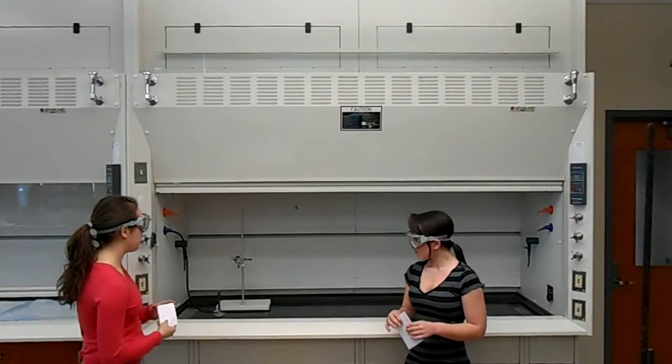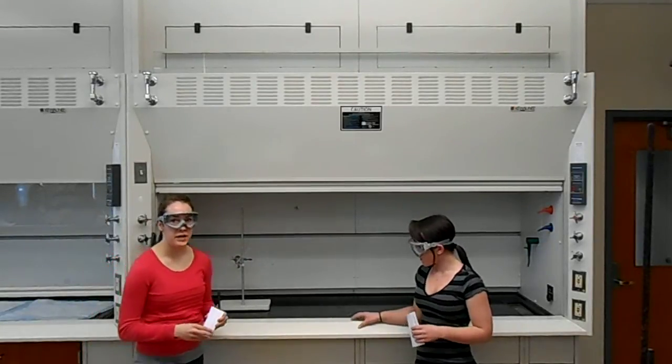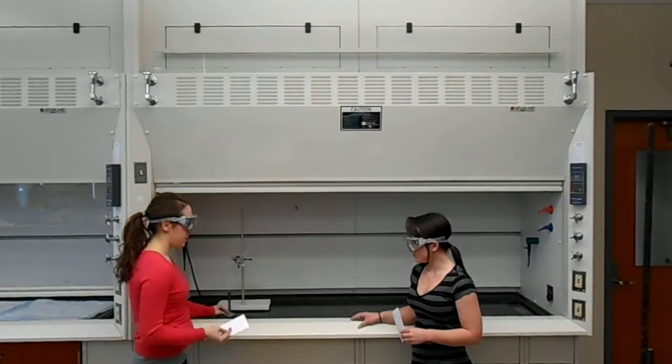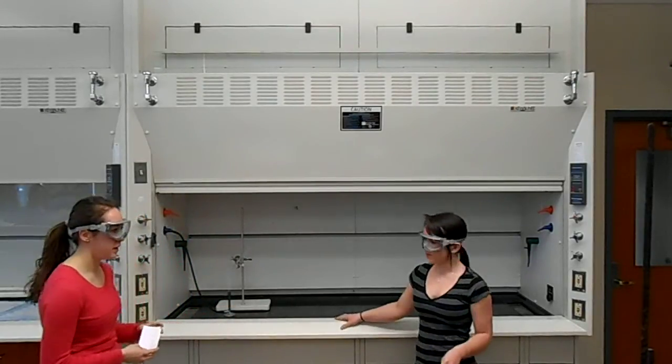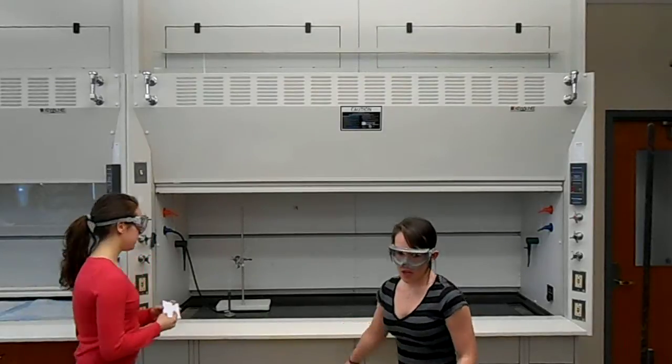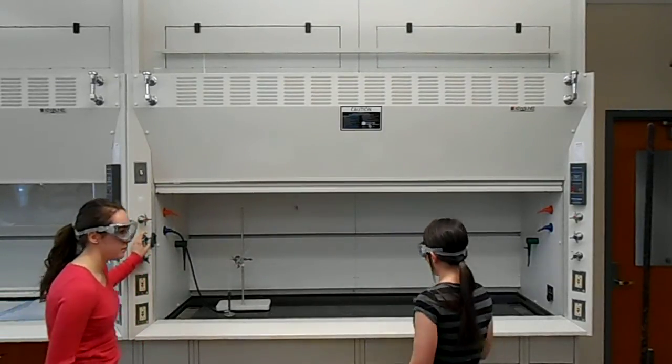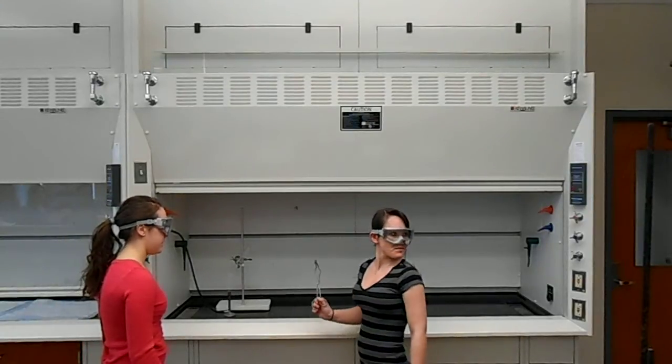As you can already see, we melted the potassium chlorate with the Bunsen burner, which we already did. So what we're going to do now is drop in the gummy bear. You must make sure that the hood is completely closed after you drop the gummy bear in, and turn the gas off as well.